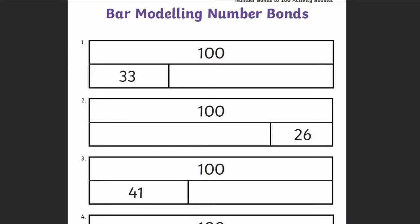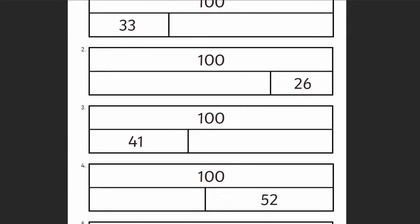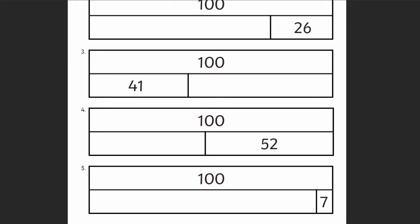Next there are these bar models. Learners can use the information given to fill in the blanks and work out the remaining number needed to make a number bond to 100.